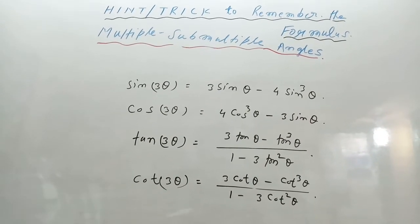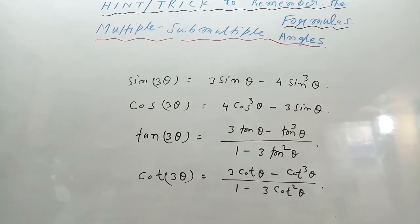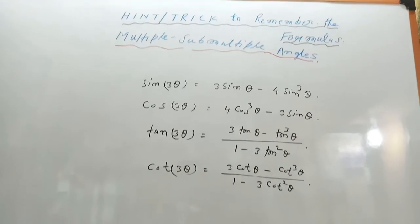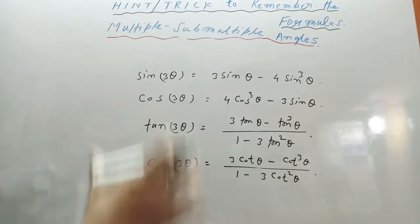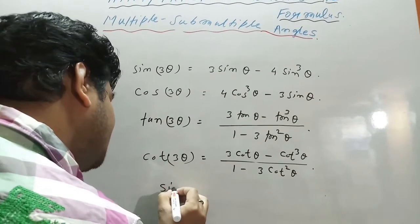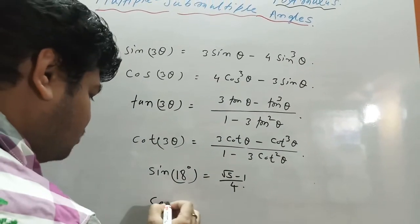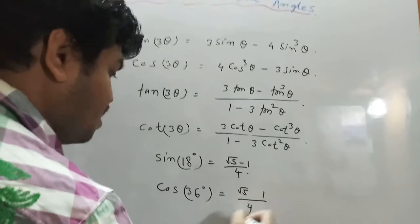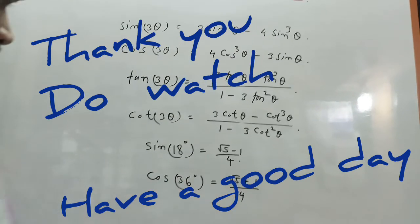If you do not like this method for remembering the formula, you can use another way. But it is most important to remember these formulas for solving problems. Also note: the value of sin 18° is (√5 minus 1)/4, and the value of cos 36° is (√5 plus 1)/4. They are the same expression — just minus for sin 18° and plus for cos 36°.